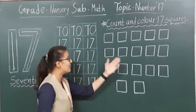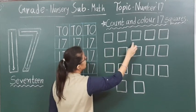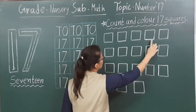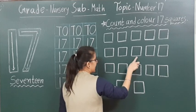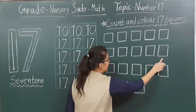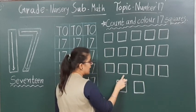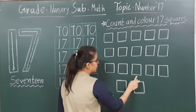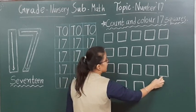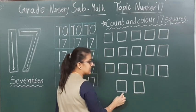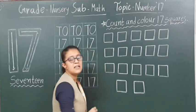So let's do counting of these squares: 1, 2, 3, 4, 5, 6, 7, 8, 9, 10, 11, 12, 13, 14, 15, 16, and 17. So students, we have to color in these given squares.